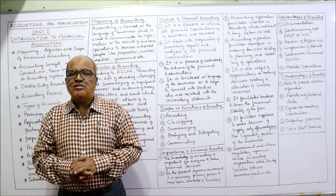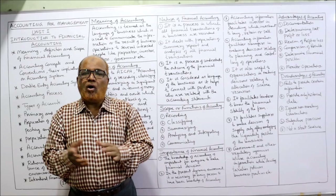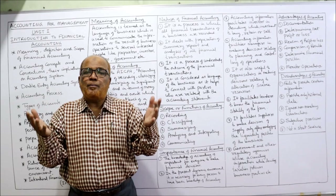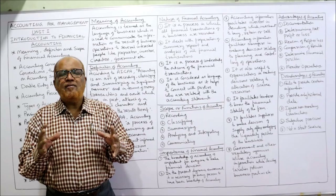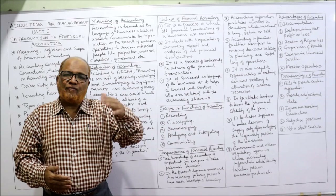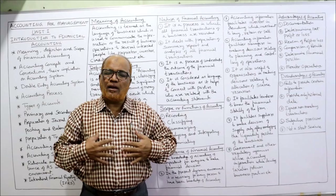Third, accounting shows the reason for profit or loss — if profits are increasing or decreasing, we can find out why, whether due to a decrease in sales or an increase in expenses. Fourth, it enables comparison of results — a business can evaluate its performance from one year to another, or compare its performance with competitors, all with the help of accounting.